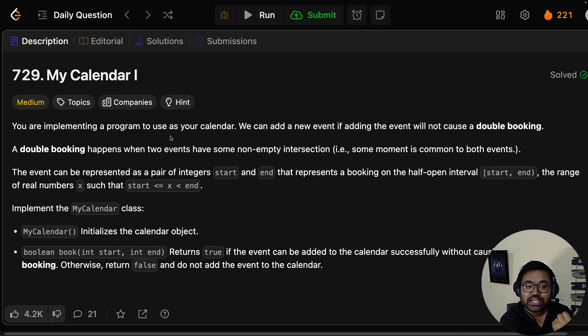The question is that you are implementing a program to use as your calendar. We can add a new event if adding the event will not cause a double booking. A double booking happens when two events have the same non-empty intersection, that is some moment is common to both events.